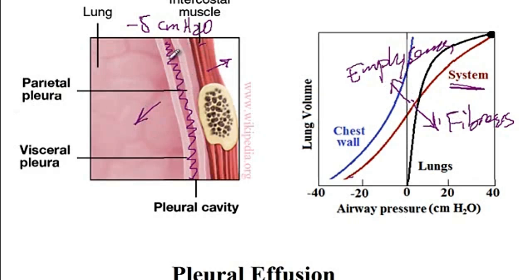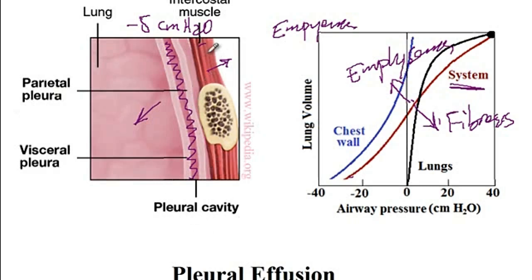With pneumothorax, air flows inside the pleural cavity, while with pleural effusion there is fluid inside. We also have empyema, where there is pus inside the pleural cavity. With all of these conditions, since there is no longer a good connection between the chest wall and the lungs, patients will have difficulty breathing.